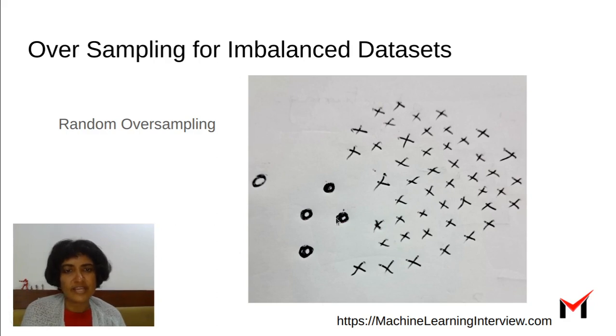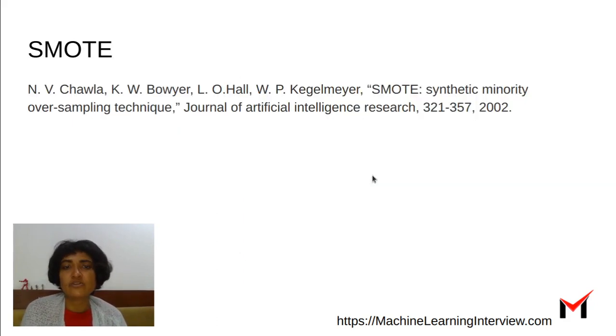This is random oversampling, where you're trying to give more weights to points because you're repeating some of these points again. But SMOTE actually attempts to create new points in order to make the distribution more equal for the majority and the minority classes.